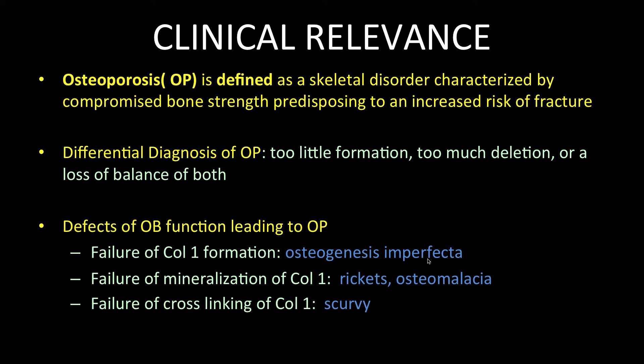Some defects of osteoblast function that lead to osteoporosis include a genetic failure of collagen-1 formation, as in osteogenesis imperfecta; a failure of mineralization of collagen-1, as in rickets and osteomalacia; and the failure of cross-linking of collagen-1, as in scurvy.